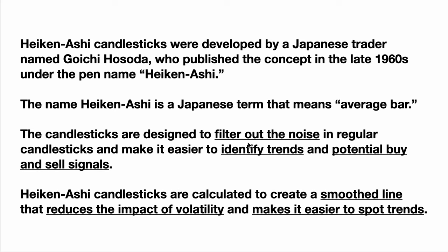You can actually identify trends more easily. You can also see potential buy and sell signals more easily, particularly when you tag it up with volume. Heiken Ashi candlesticks are calculated to create a smooth line that reduces the impact of volatility, so you don't get thrown off by volatility and it makes it easier to spot trends.